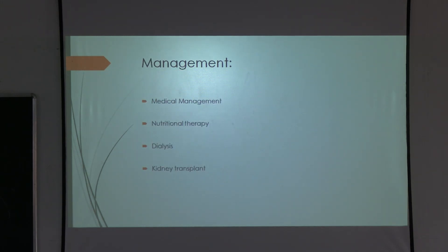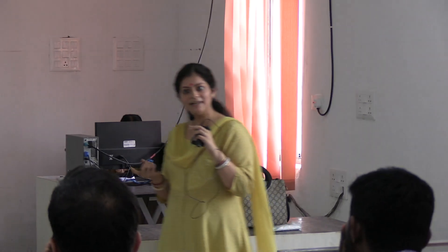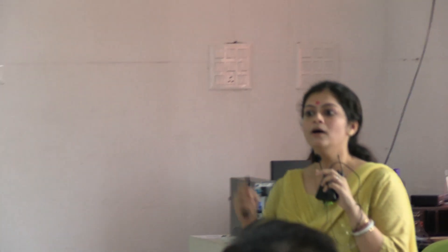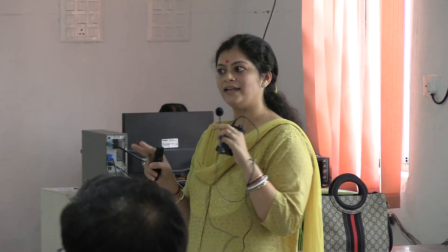Management of chronic renal failure includes medical management, nutritional therapy such as parenteral nutrition, and fluid therapy. The patient may have to undergo dialysis. There are two types of dialysis: peritoneal dialysis and hemodialysis. For hemodialysis, an AV line is created.